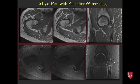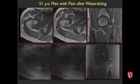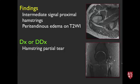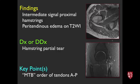Next case, 51-year-old man with pain after water skiing. MRI shows intermediate signal in the proximal hamstrings — they should be dark — with edema around and within them on T2-weighted scan. This is a partial tear of the proximal hamstrings, more specifically the semimembranosus component. The order of the hamstring tendons at the proximal attachment: semimembranosus, semitendinosus and biceps with a common origin — abbreviated MTB (like mycobacterium tuberculosis).